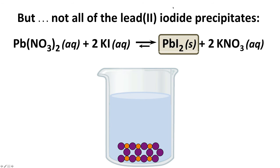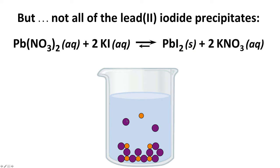If we add some lead(II) iodide, here is what it would look like if all of it had precipitated. But it doesn't all precipitate — a little bit of it is actually dissolved as ions. We'll next look at how to describe and quantify that.